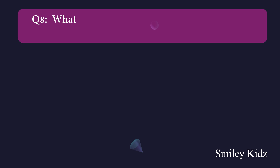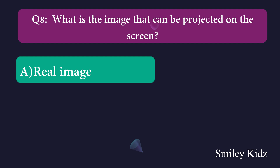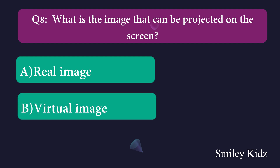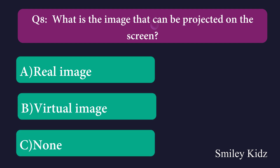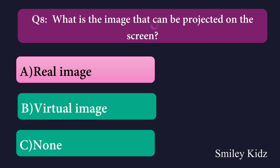Question number eight: What is the image that can be projected on the screen? Option A: real image, Option B: virtual image, Option C: none. The right answer is real image. Real images can be projected on the screen.